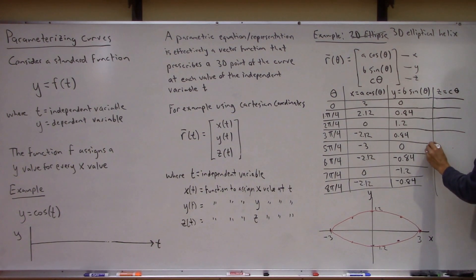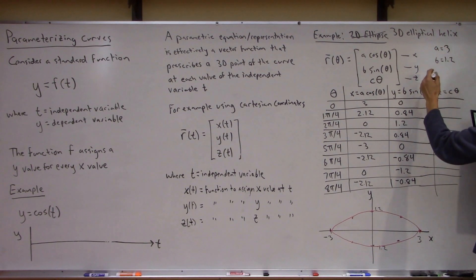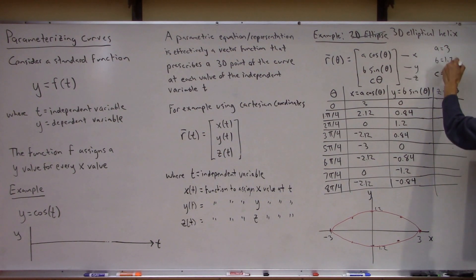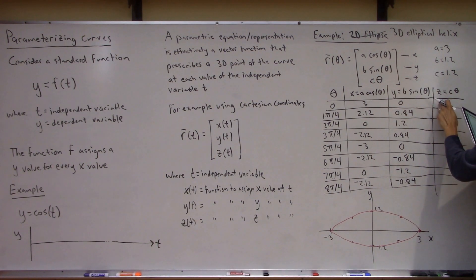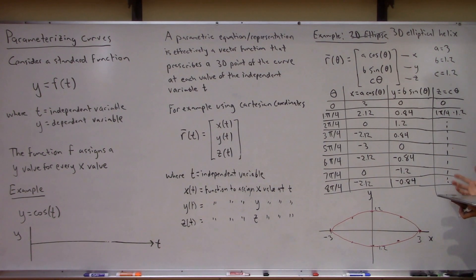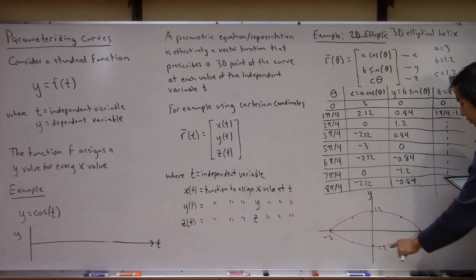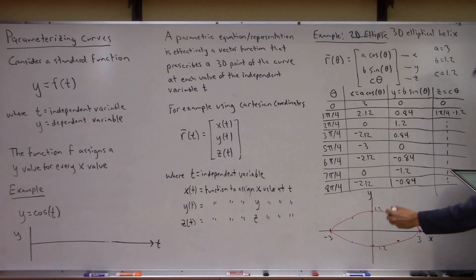Pick a value of C — I'm going to use the same values of a and b: a of 3, b of 1.2, and C of 1.2. You can fill in the table — at theta equals zero you get z equals zero; at one pi over four you get z equals one pi over four times 1.2, and so on. When you plot this, you get the ellipse but now the z value grows out of the plane — the z dimension comes out of the page. So you end up with this elliptical helix description from this parametric representation.